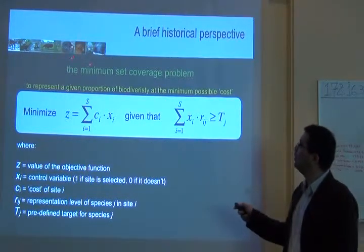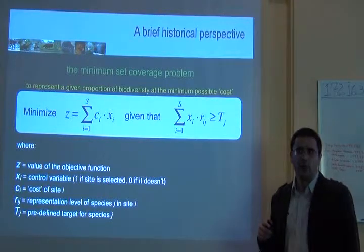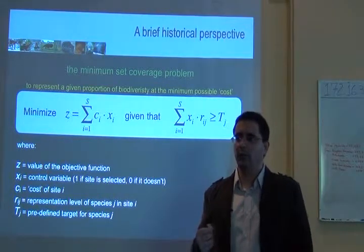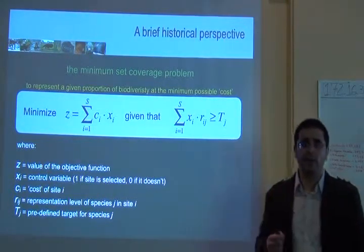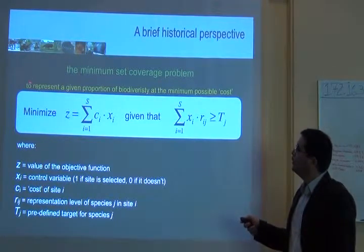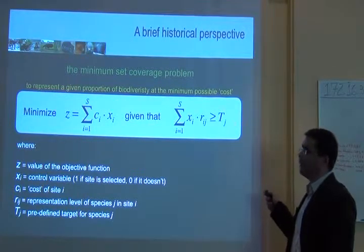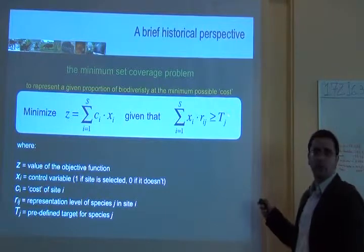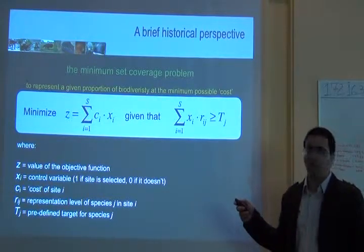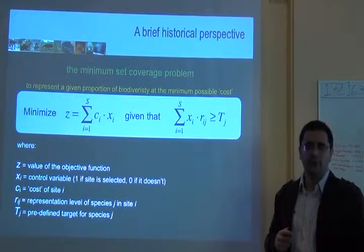This is what the problem is called: the minimum set coverage. What is the minimum set I need to have to protect the species, if I want to represent a given proportion of biodiversity that has been set up in my target, at the minimum possible cost?